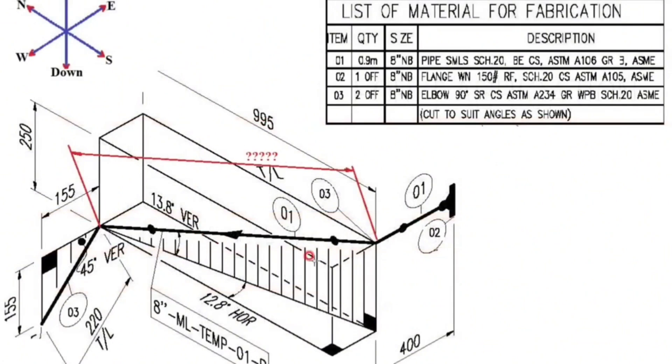Let's try to read the pipe isometry correctly. There are 3 turns in the pipe drawing. These are 13.8 degrees vertical, 12.8 degrees horizontal, 45 degrees vertical turns.